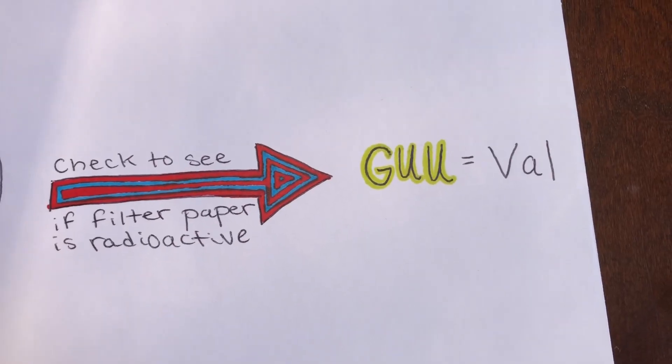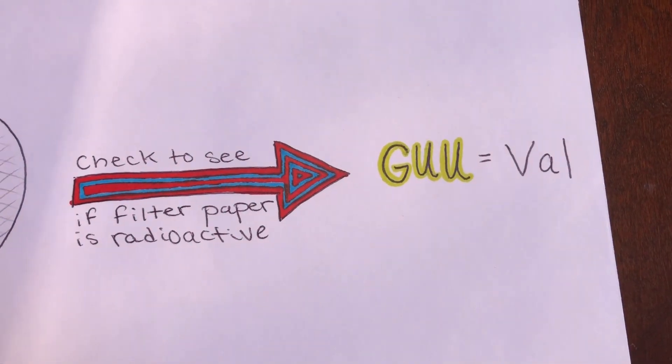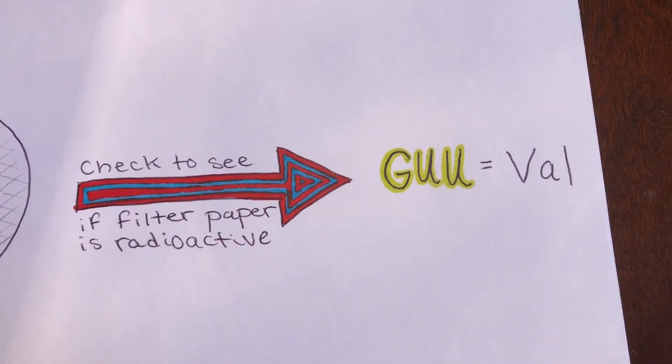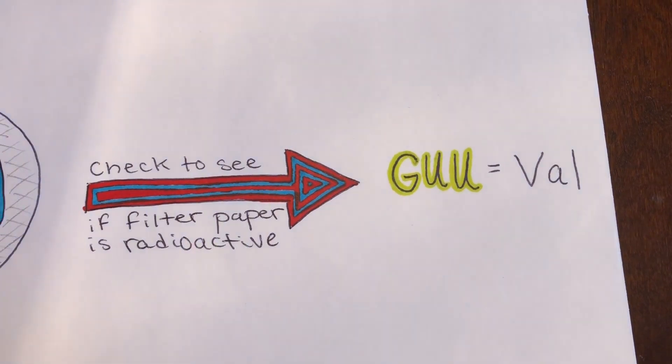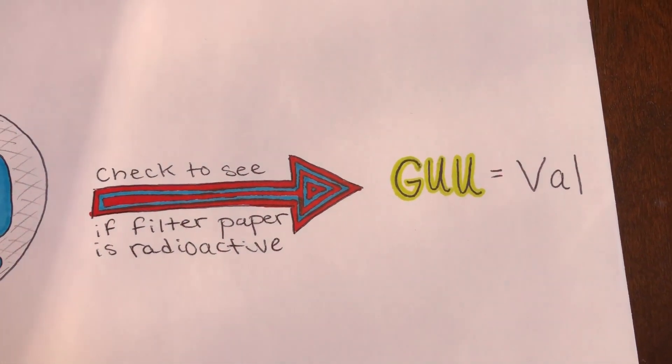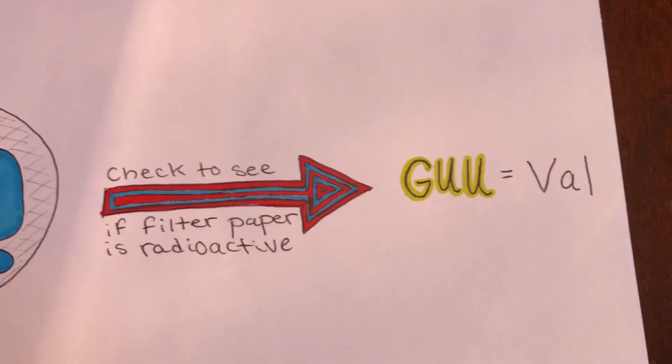The filter paper was then checked for radioactivity and for which amino acid had bound. If radioactivity was found, then the trinucleotide codes for that specific radioactively tagged amino acid. In other words, that specific codon specified that amino acid.